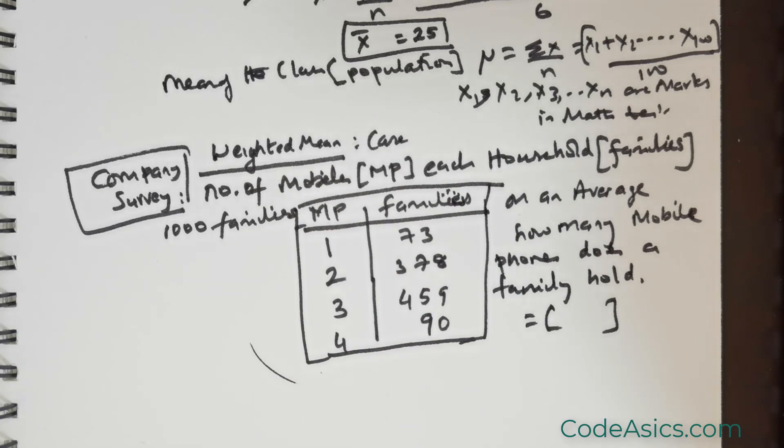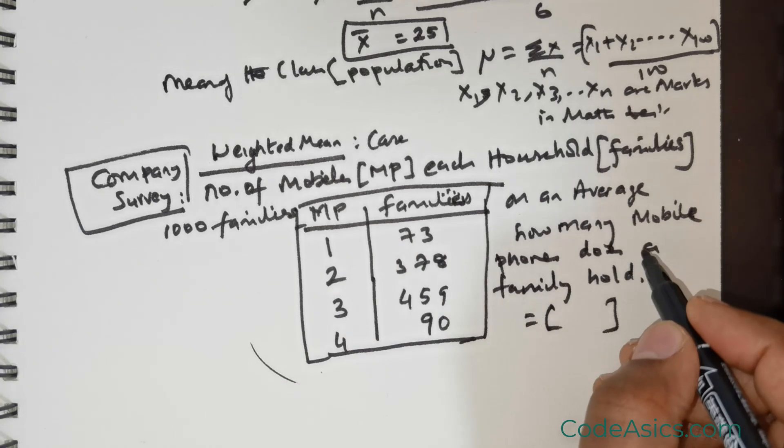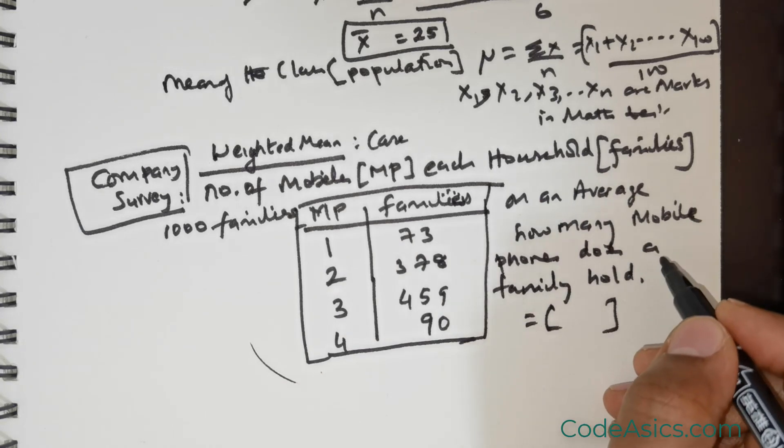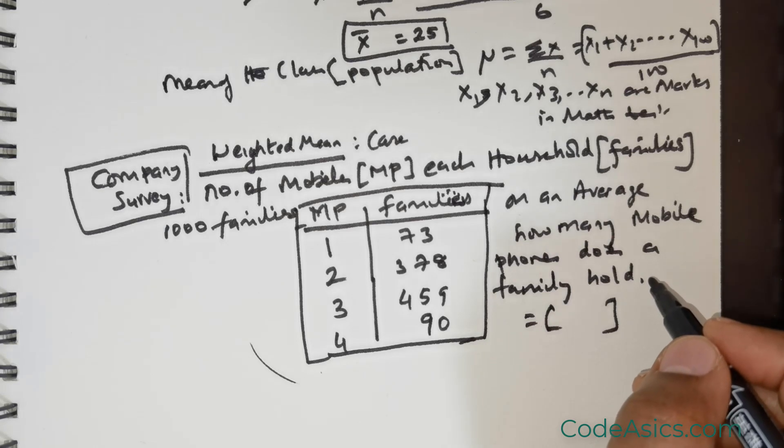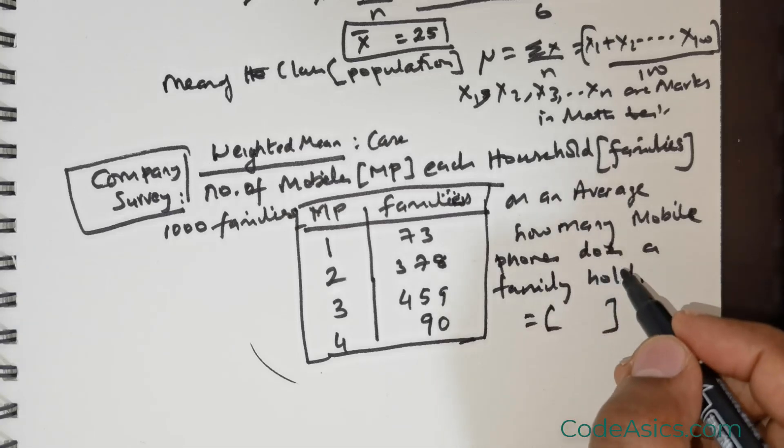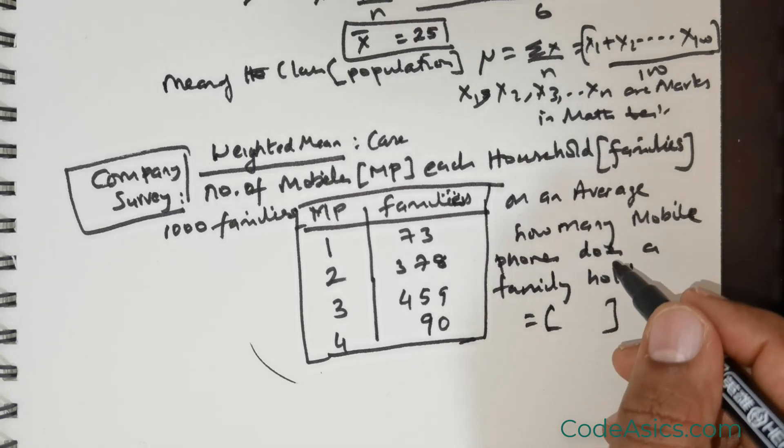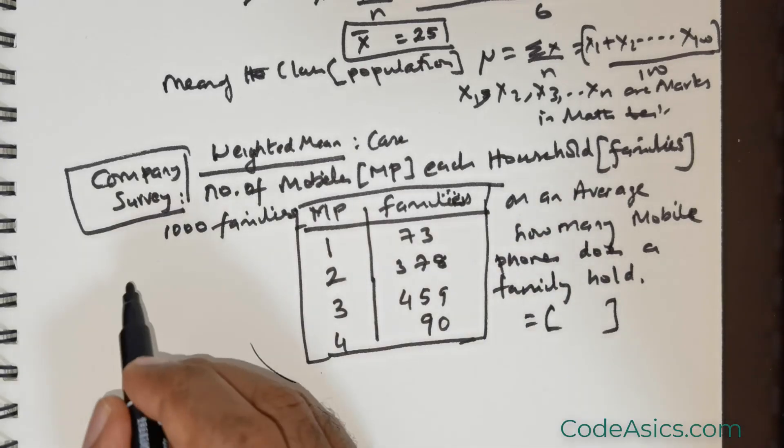So the question - this is the research question: on average, how many mobile phones does a family hold? We are finding the answer to this very important research question. How are we going to do that?